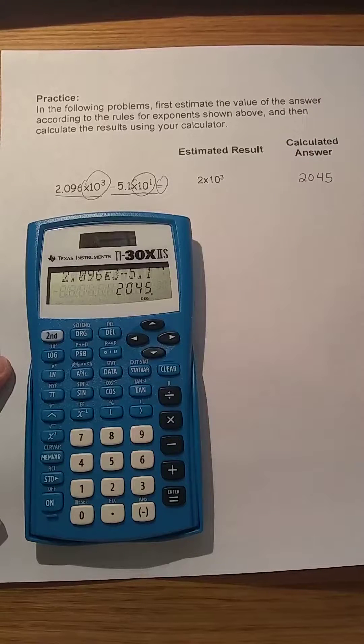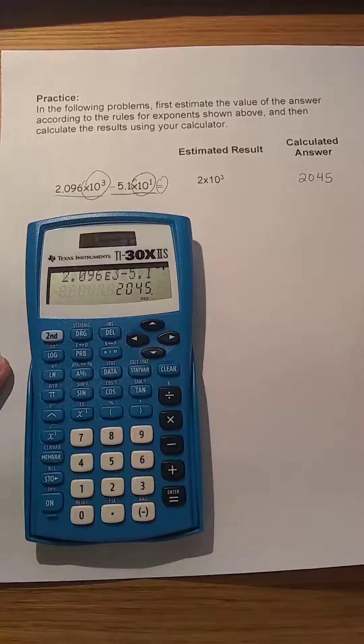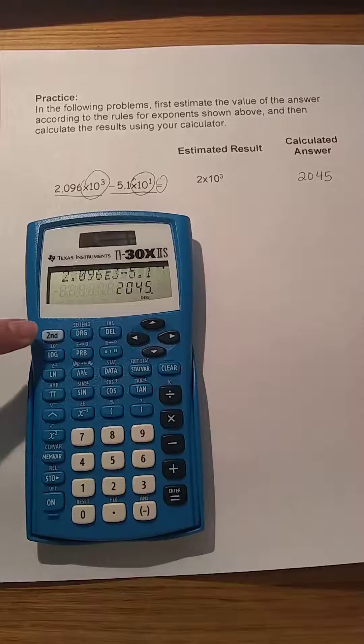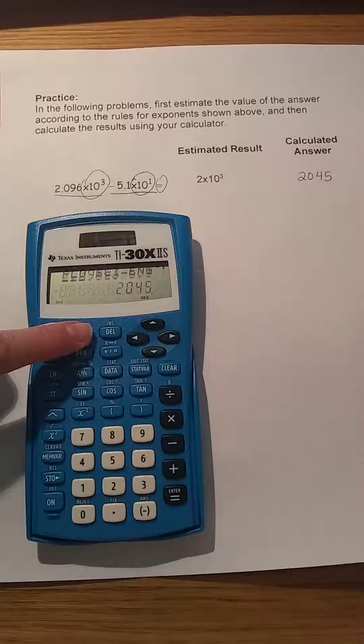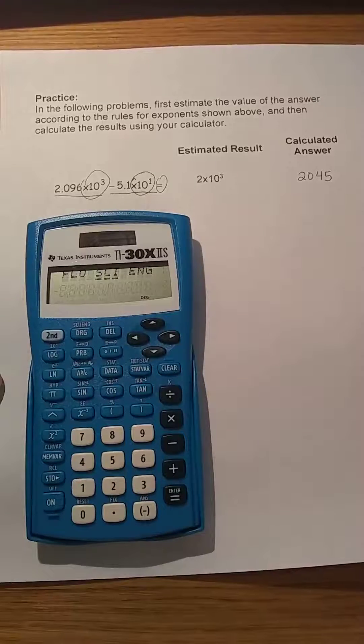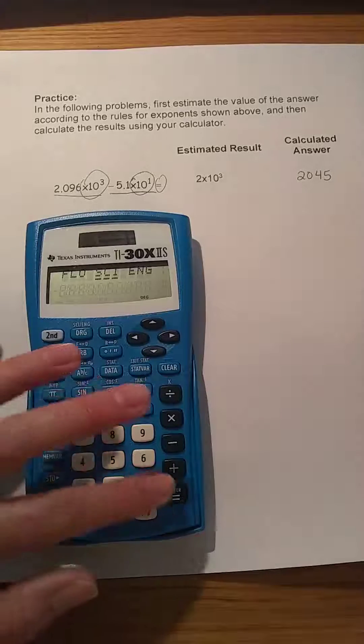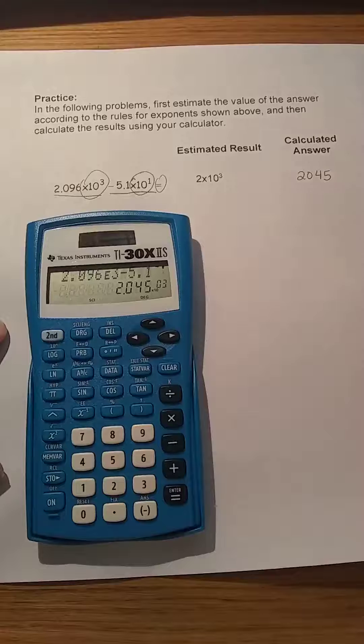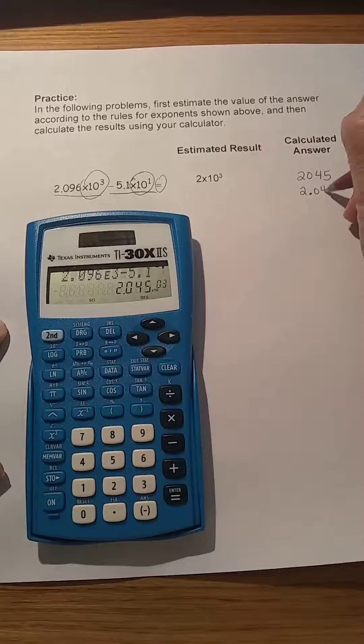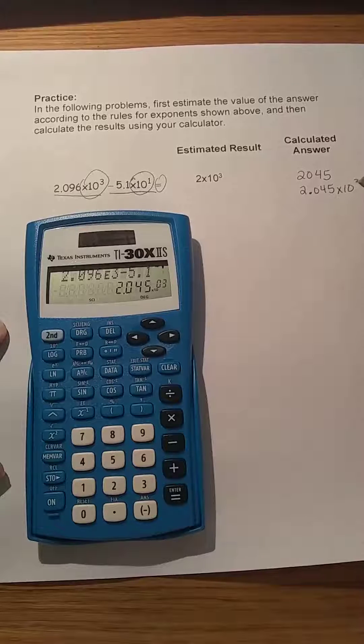If we want to express this number in scientific notation, we can do that on the calculator as well. On this calculator, we use the second function key, the SCI engineering key, use the cursor to select SCI, enter, and we see our value expressed in scientific notation is 2.045 times 10 to the third.